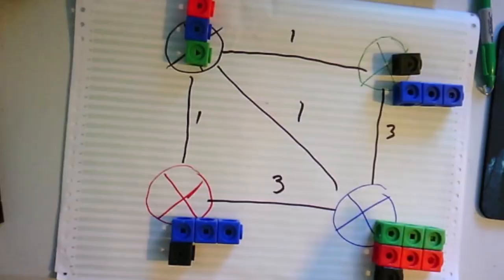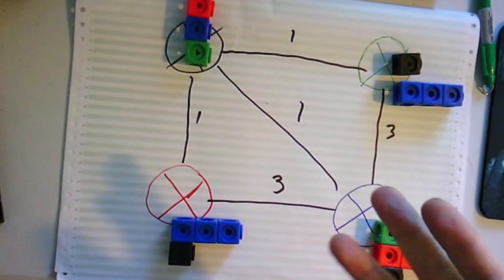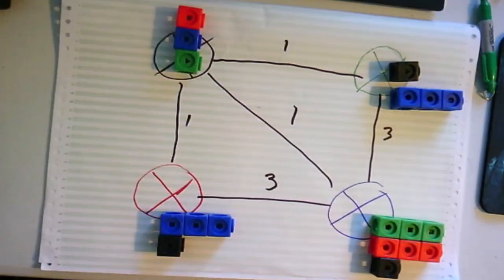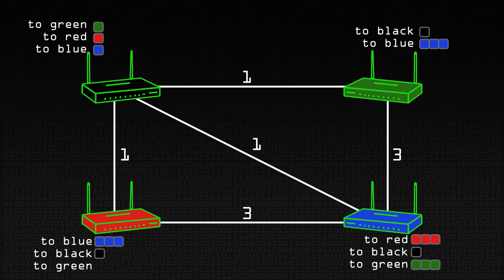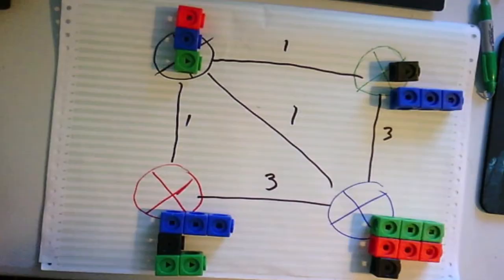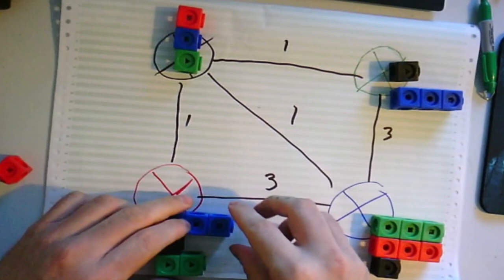Now the routers are going to exchange their routing tables. Let's take the black router - it's going to send out its routing table to its neighbours, saying: hey red, I can get to red in one, blue in one, green in one. When red sees that, red hears for the first time about green. Red didn't previously know about green. So red can now say: I can get to green in the one cost you told me plus the one cost it takes me to get to you - so I've got a new route to green. Red can also say: you can get to blue in just one - so if I add on the one it takes me to get to you, I've now got a route to blue in two.